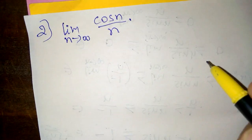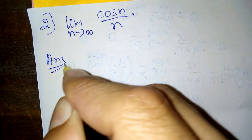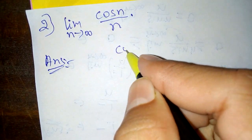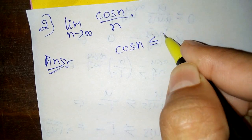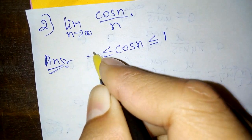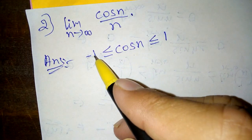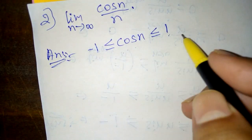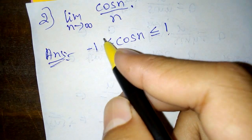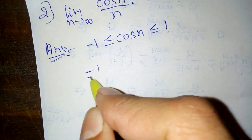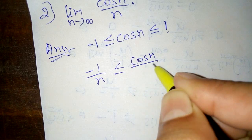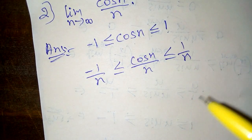The second problem is: the limit as n tends to infinity of cos n / n. We know that cos n is always less than or equal to 1 and greater than or equal to −1. The range of cos n is also −1 to +1. If we divide the whole inequality by n, we get: −1/n ≤ cos n / n ≤ 1/n.